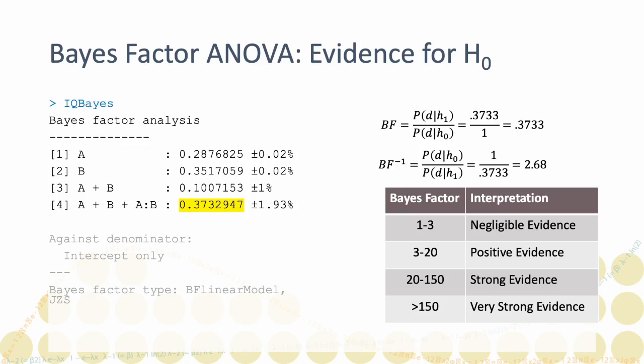However, we can flip this around. Because the Bayes factor expresses a ratio in favor of the alternative hypothesis, the inverse is the ratio in favor of the null hypothesis. Thus, the available evidence is 2.68 to 1 in favor of the null hypothesis.